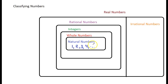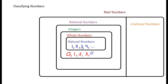Our next category is whole numbers. Whole numbers include the natural numbers — that's why the natural numbers are inside the whole numbers box — but whole numbers also include the number zero. So whole numbers start with zero, because you could have zero of something, and then include all the natural numbers: one, two, three, four, and so on.